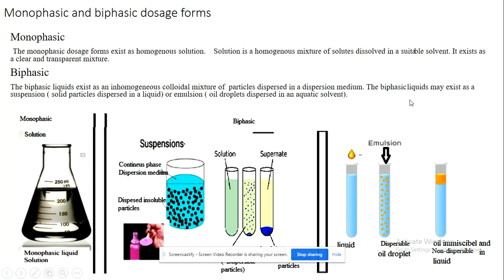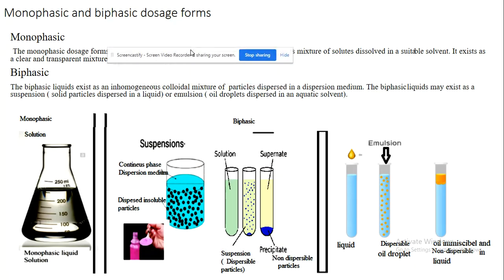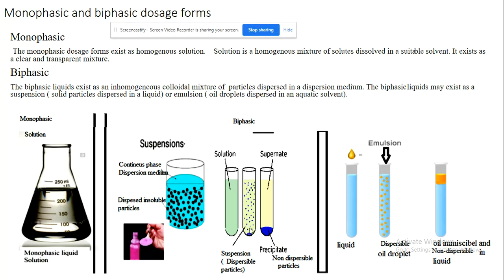The biphasic liquid may exist as a suspension (المعلق). A suspension consists of solid particles dispersed in a liquid. For example, clay in water: clay cannot dissolve in water but can disperse in it. Looking at three tubes — tube one shows a homogeneous mixture of solute and solvent, clear and transparent. Tube two shows particles dispersed in the dispersion medium; these particles are insoluble but they can disperse within the dispersion medium. We call this a suspension.